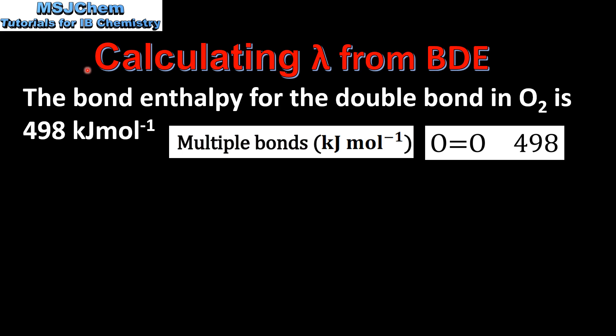Next we'll be looking at calculating the wavelength from the bond dissociation enthalpy. The bond enthalpy for the double bond in oxygen is 498 kilojoules per mole to the negative one.